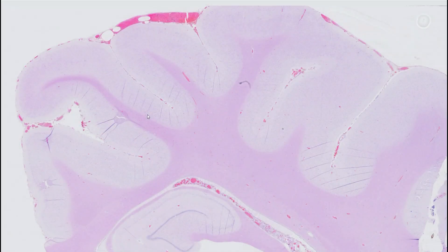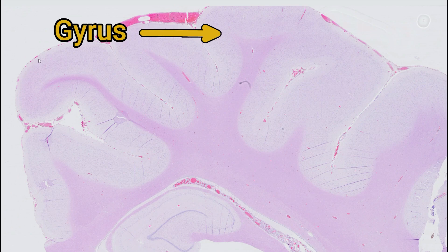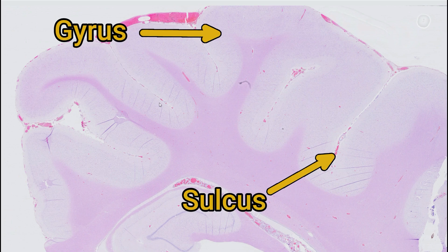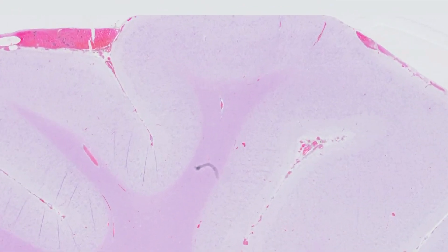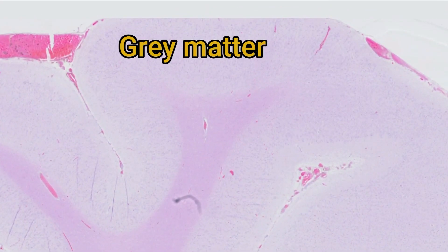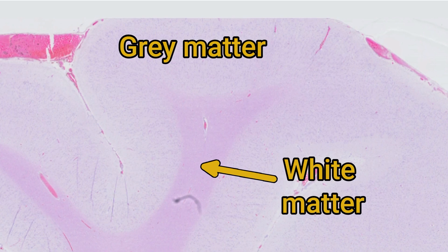This is a section of cerebrum from a calf, and at low power we can make out some anatomic features. We have the gyri, which are these wrinkly bits on the brain, and then sulci, which are the depressions or the folds. Each of these wrinkles on the brain has an external capsule of grey matter and then a central core of white matter. The grey matter looks very much more cellular - this is where all of the neurons are - and then the white matter is much more pink and dense, where all of the axons are.